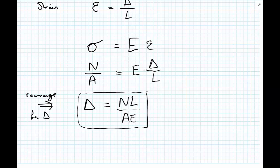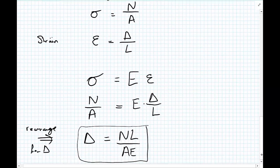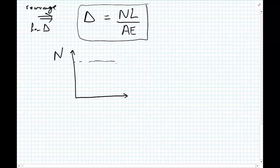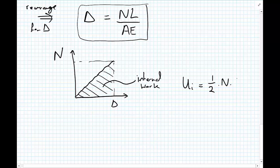So like we did last time for external work, we can similarly draw a graph of force versus displacement, where this goes to a maximum value of N and at a maximum value of delta. So we have a straight line because we're linear elastic, we're assuming Hooke's law. And again, we have the area underneath this graph is equal to the internal work done. So in this case, U_i equals one-half of N delta.